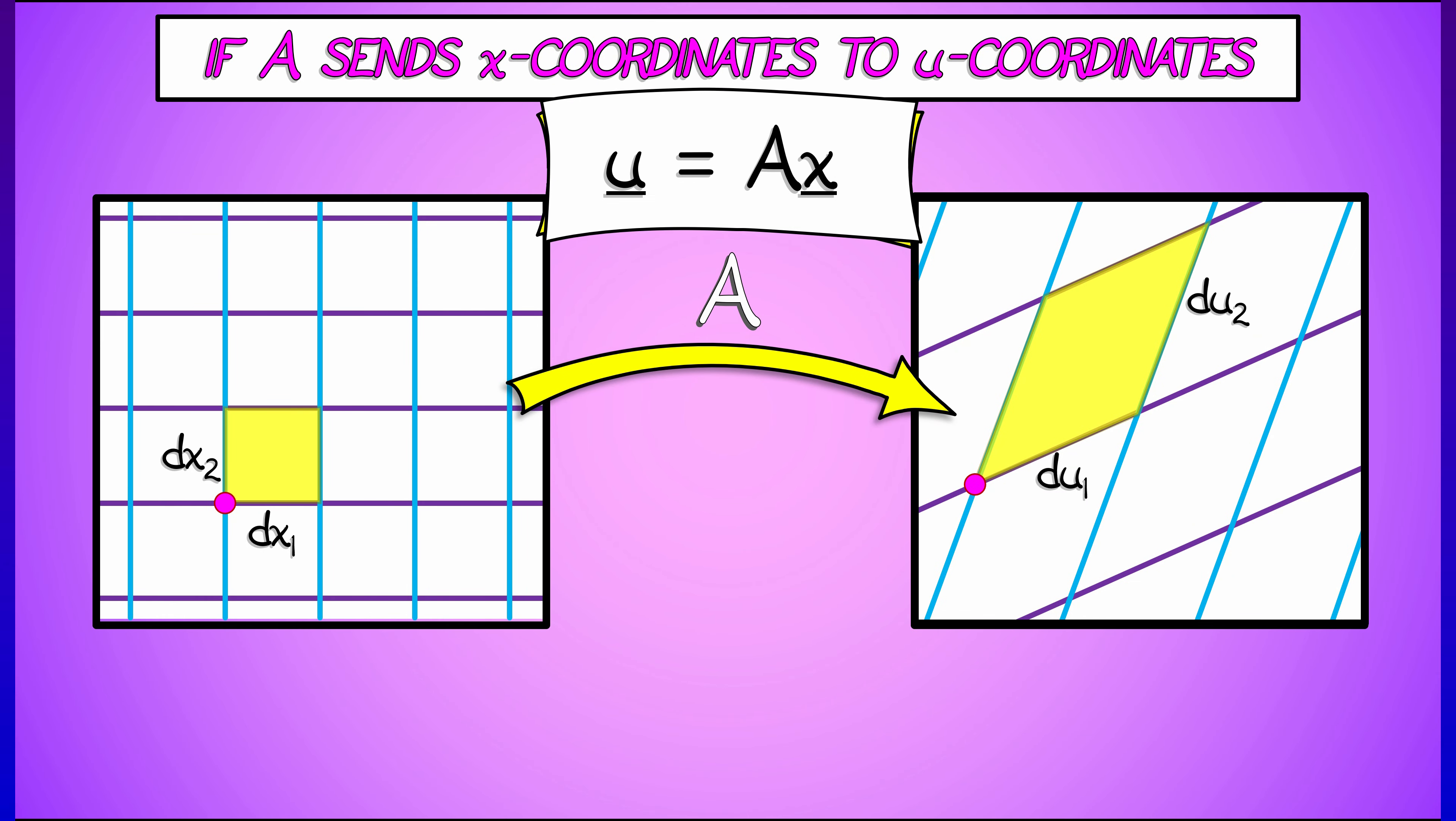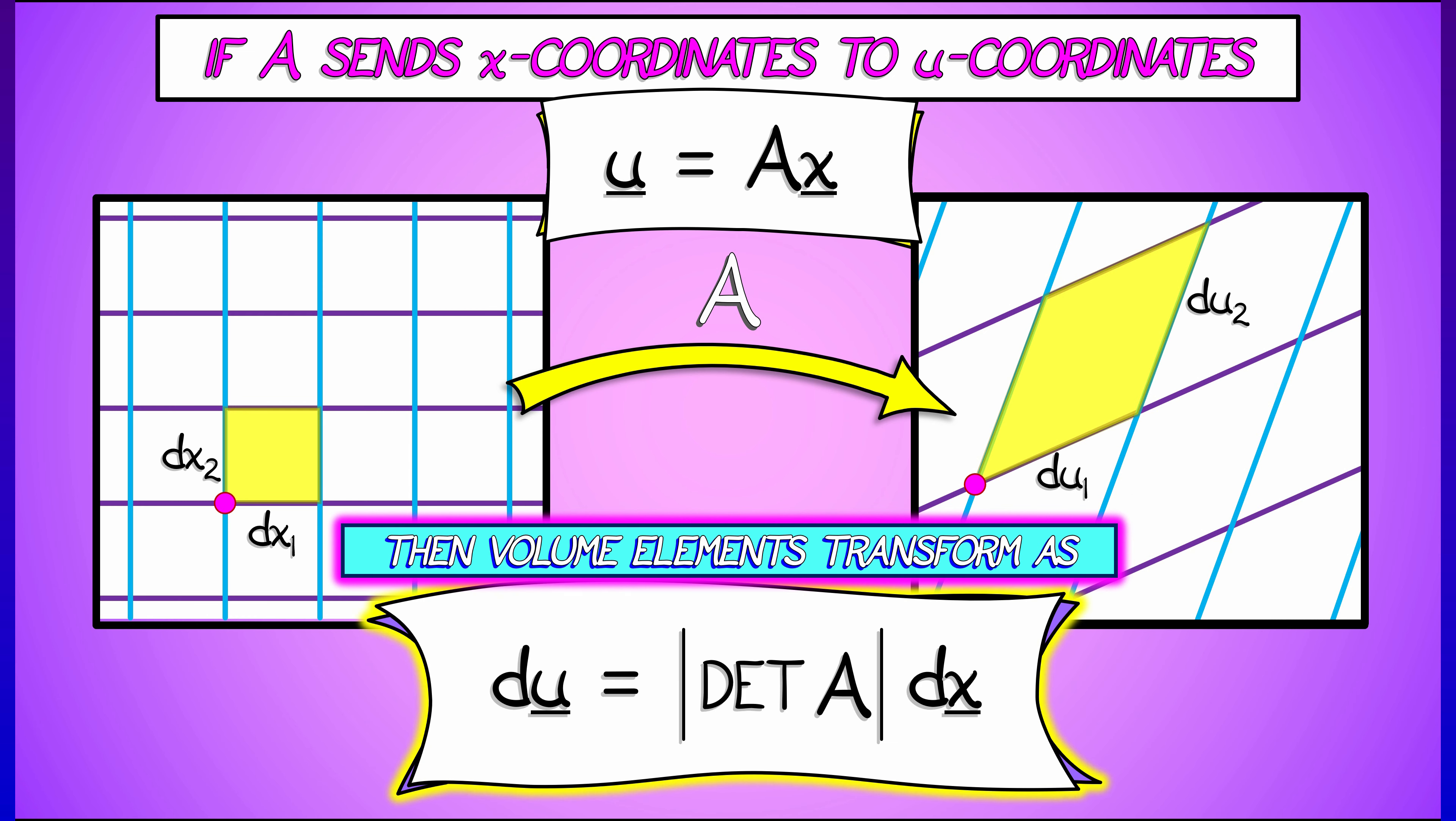Let's say that A is a linear transformation that sends x-coordinates to u-coordinates, that is u equals A times x. Then volume elements transform as follows: